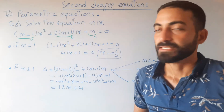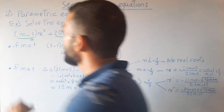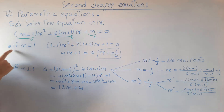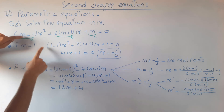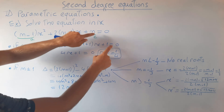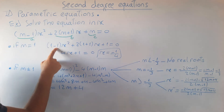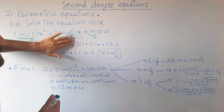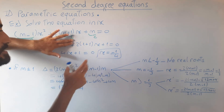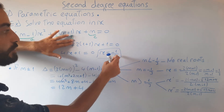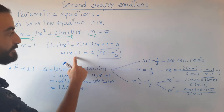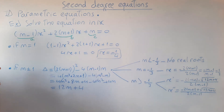Parametric equations example: solve in x the equation (m−1)x² + 2(m+1)x + m = 0. If m = 1: (1−1)x² + 2(1+1)x + 1 = 0, which reduces to 0·x² + 4x + 1 = 0, a linear equation with root x = −1/4.